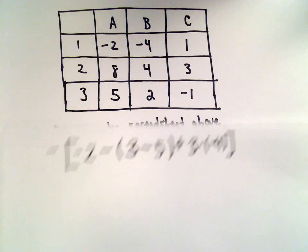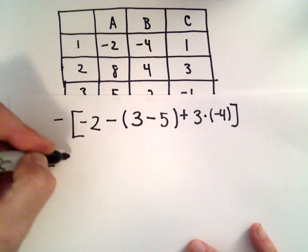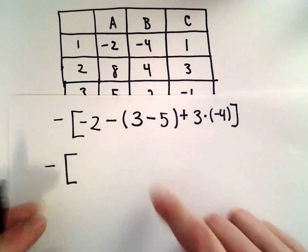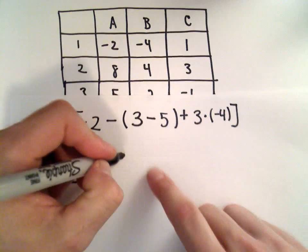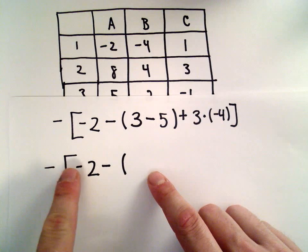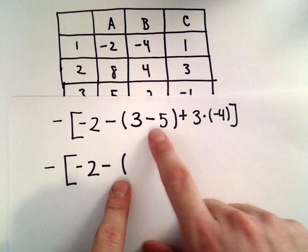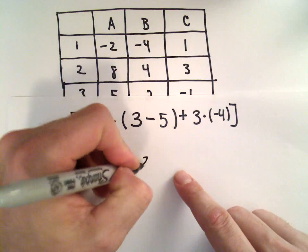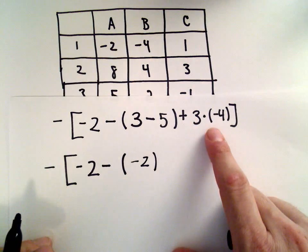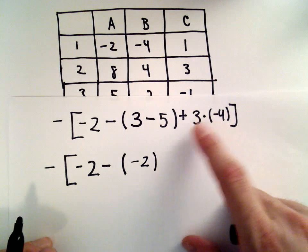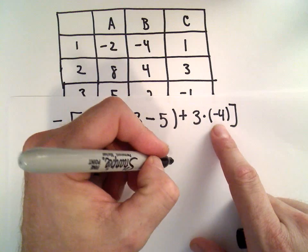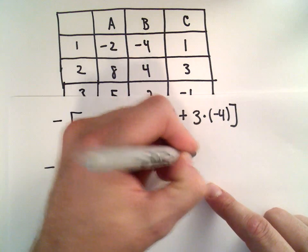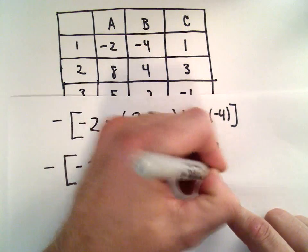Okay, so now let's simplify this. So the order of operations, let's try to do things inside parentheses first. I've got my negative, negative 2 minus. So 3 minus 5, that's going to be negative 2. We can also go ahead and multiply. 3 multiplied by negative 4, that's going to give me negative 12. So we could write plus negative 12.